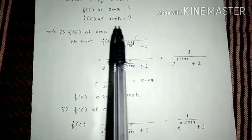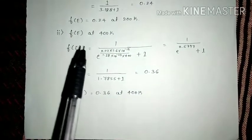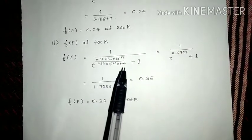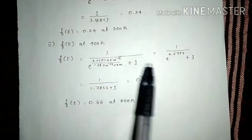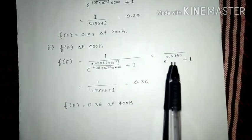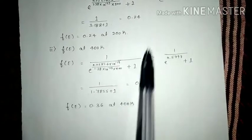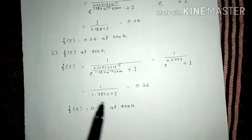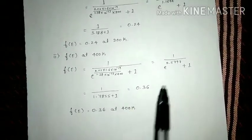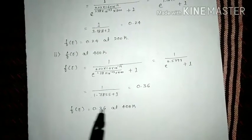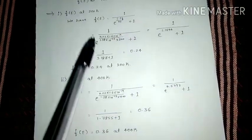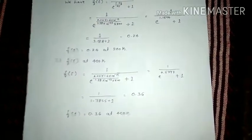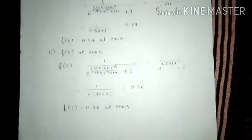For the second case, F(E) at 400 K: F(E) = 1 / [exp((E − EF) / kT) + 1] with T = 400 K. Simplifying, we get 1 / (exp(0.5797) + 1) = 1 / (1.7855 + 1) = 0.36. So F(E) at 400 K is 0.36. This is how we easily find the probability function at different temperatures. Thank you.